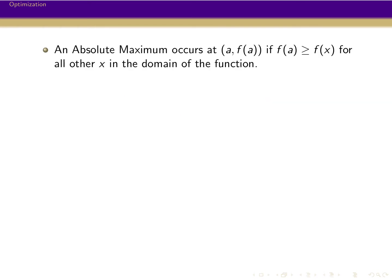So first let's talk about absolute maxima and absolute minima. A relative maximum is a point that's the largest point in some interval around it. An absolute maximum is the largest point over the entire domain — not over just some small interval, but over all possible x values. So it is the largest possible value of the function.